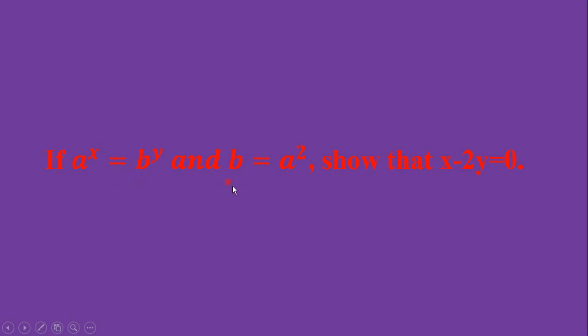equals b^y and b equals a^2, then show that x - 2y = 0. The question and solution are here. Given a^x = b^y, then a^x